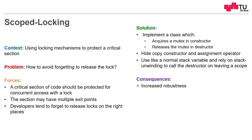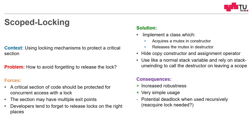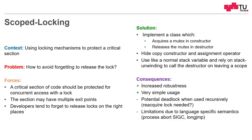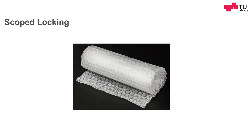The consequences: it increases the robustness of our source code — we cannot forget to unlock, and it's very easy to use. However, there is a potential problem: when using scoped locking in recursive calls, we could enter a deadlock situation. This can be solved by using a re-entrant lock, which allows multiple re-acquisitions by the same thread. There are also language-level limitations — for example, a long jump could break the stack unwinding semantics and therefore break the scoped locking pattern. Think of scoped locking as using bubble wrap around your locks.